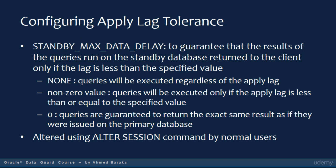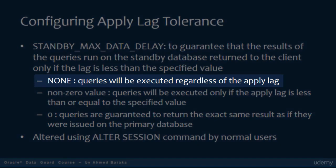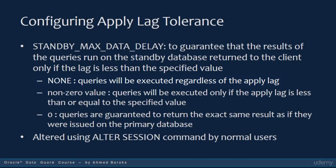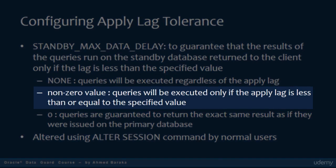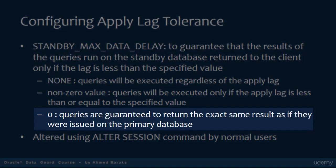This parameter can take one of the following values. The default value is NONE — when the parameter takes this value, the queries will be executed regardless of the apply lag. You can give the parameter a non-zero value; in this case the queries will be executed only if the apply lag is less than or equal to the given value in seconds. If you assign zero to this parameter, the queries are guaranteed to return the exact same result as if they were issued on the primary database.